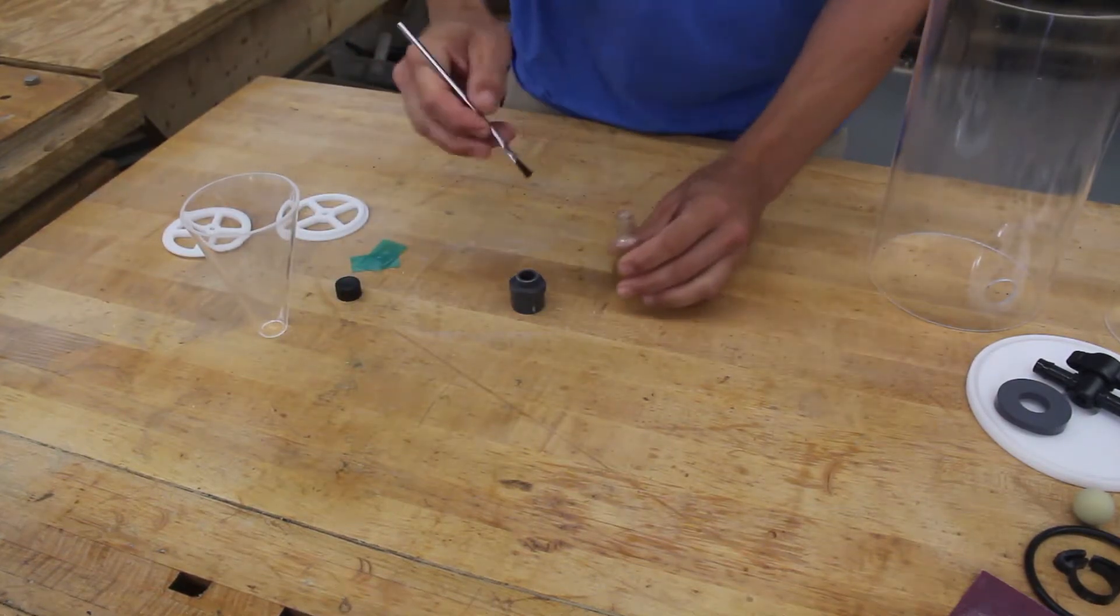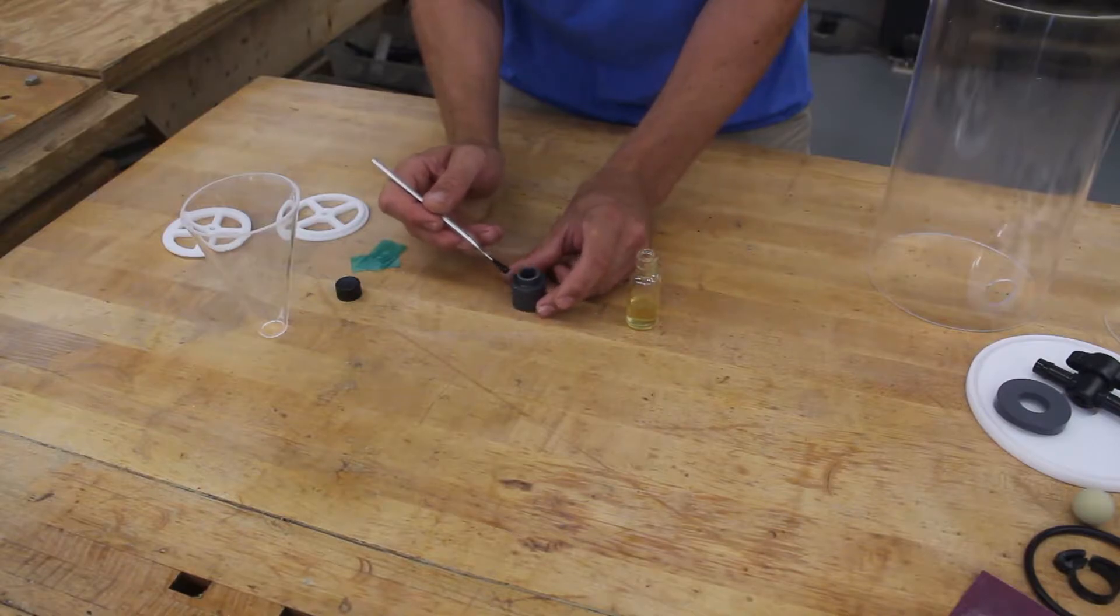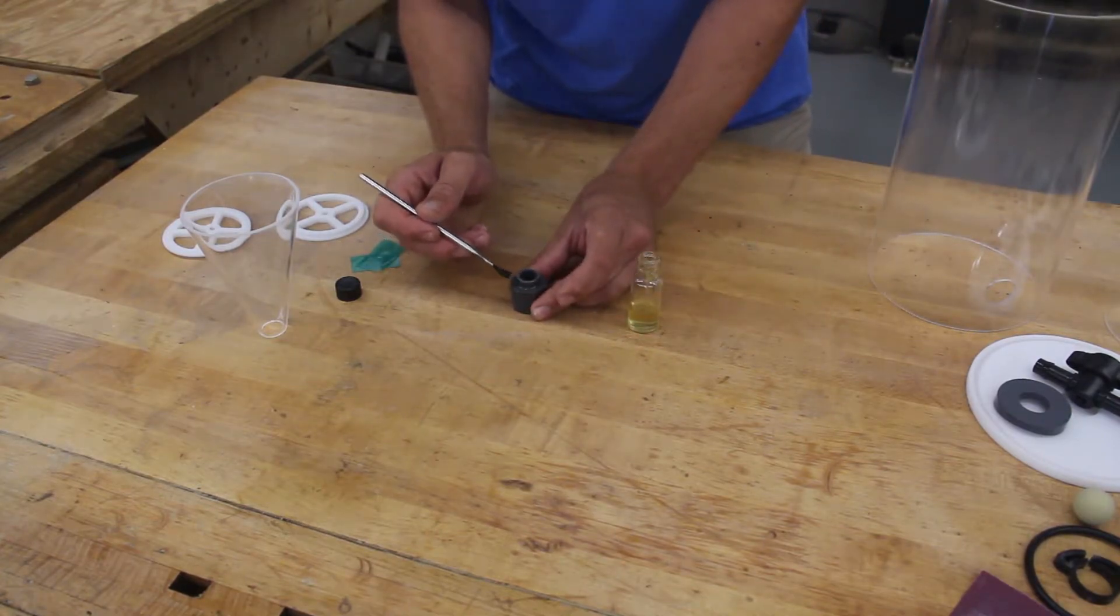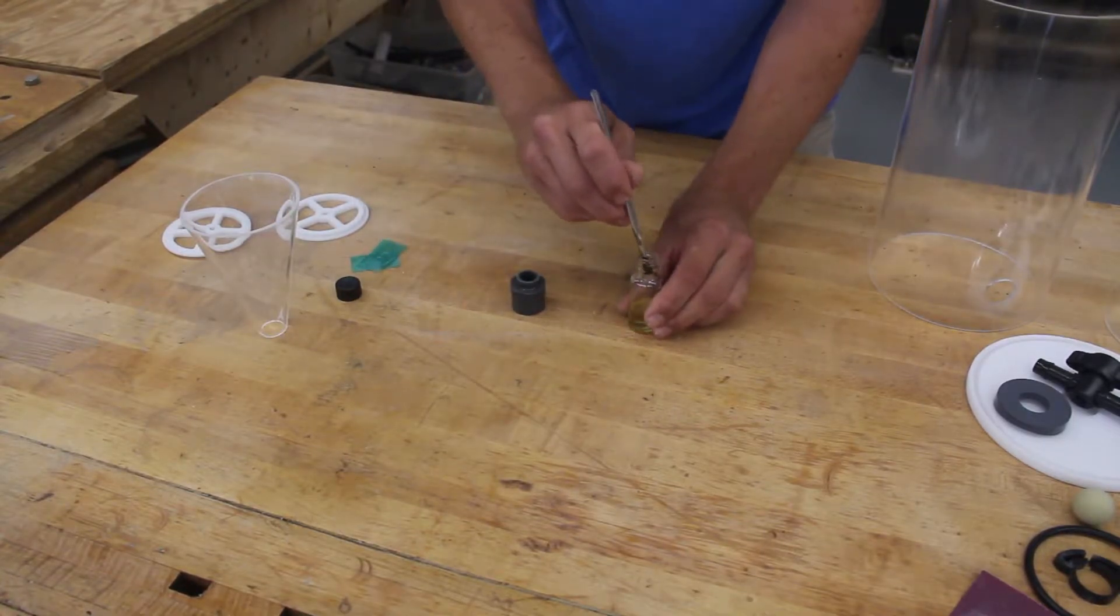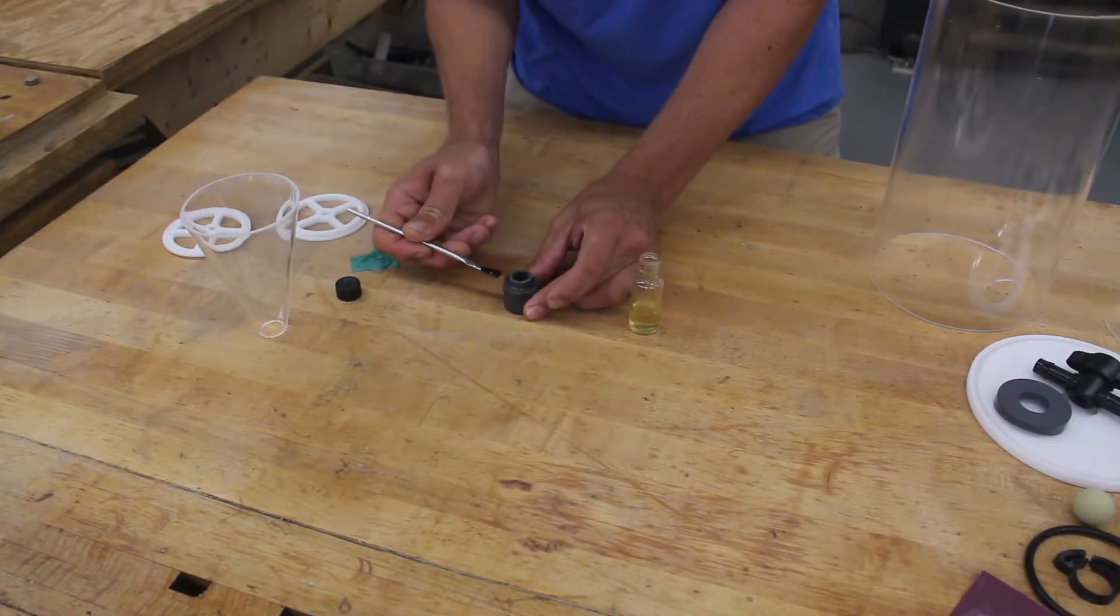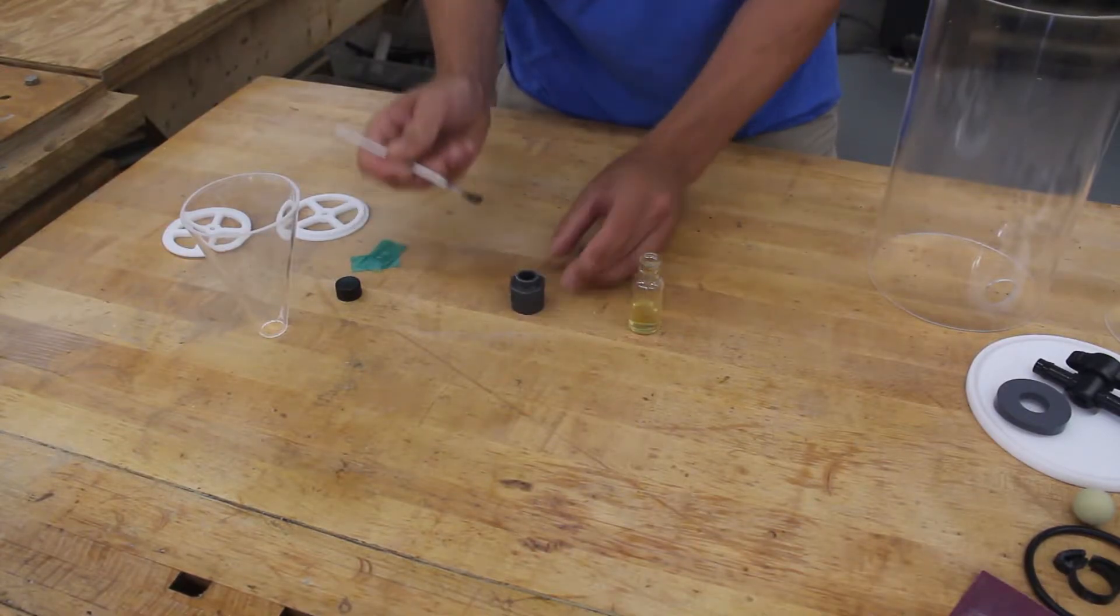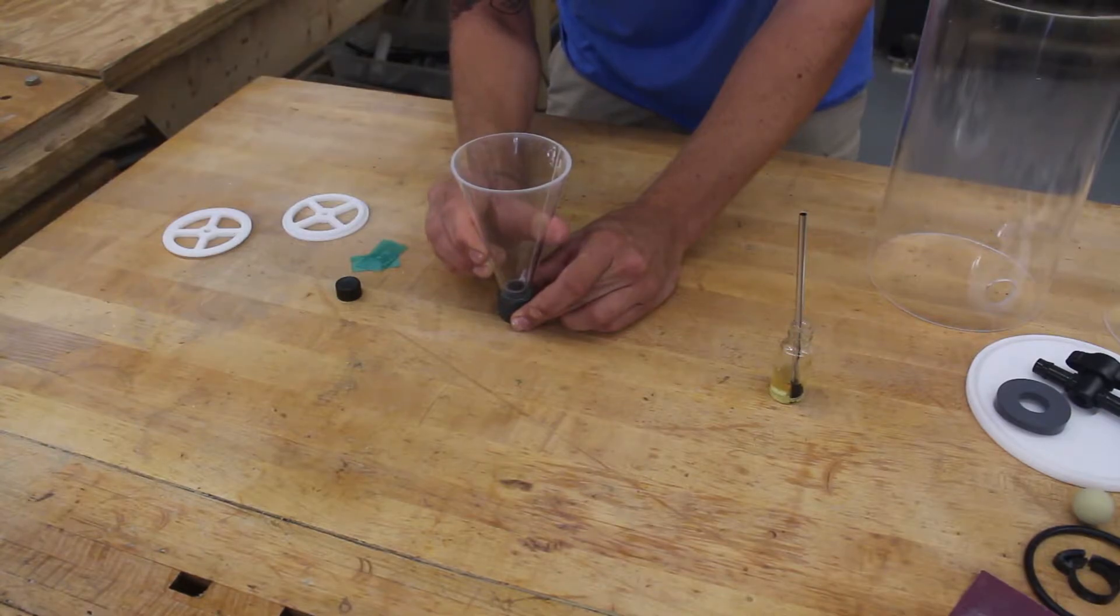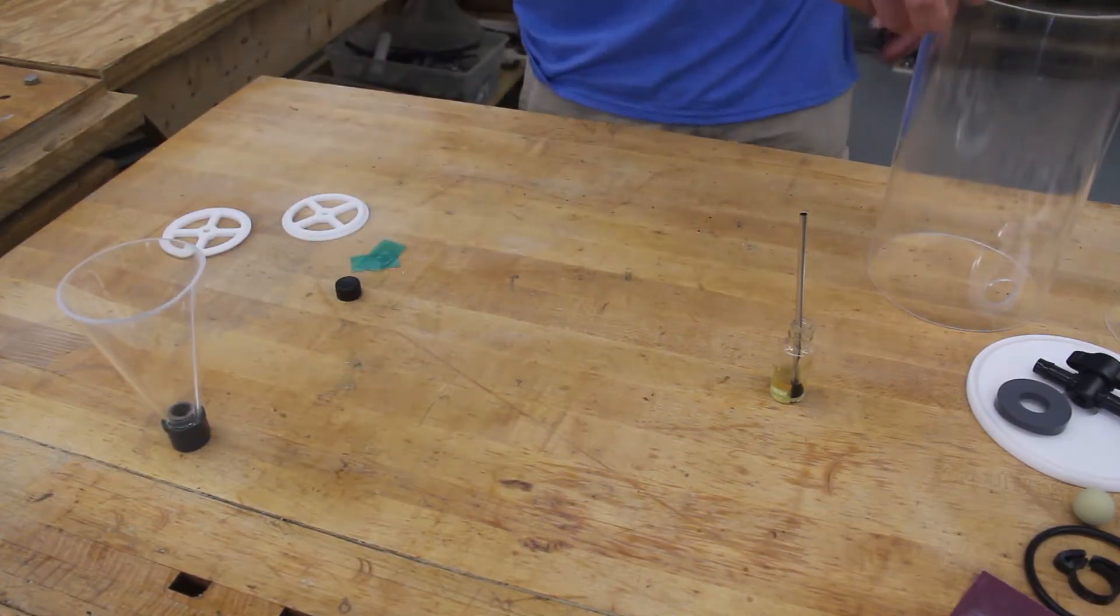Once the cone is prepped, we can glue it on the cone adapter. We will use the amber solvent this step and apply a decent amount with the applicator brush. Now we can set this aside to dry for about one hour.